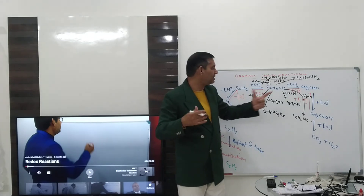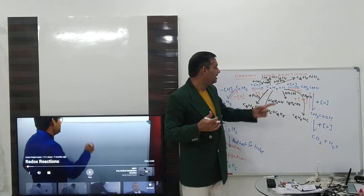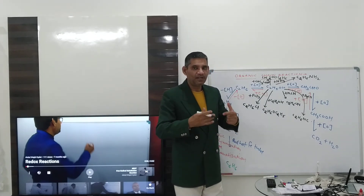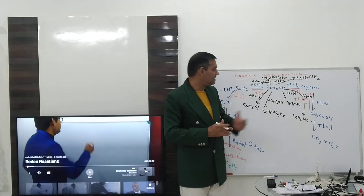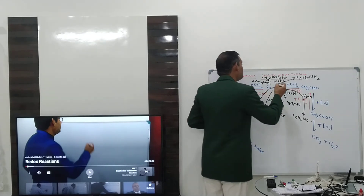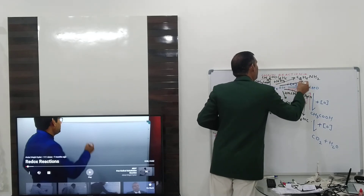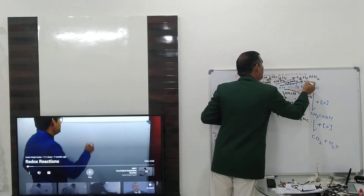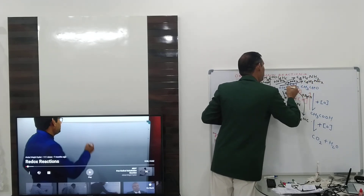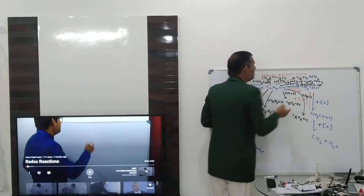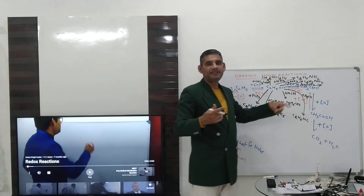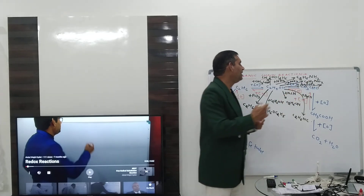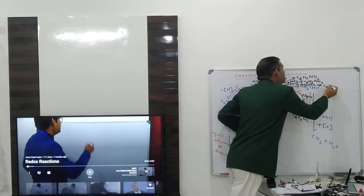Why this difference in product with KCN and AgCN? The reason is that KCN is ionic in nature and AgCN is covalent in nature. Because of that covalent or ionic nature of KCN and AgCN, this difference in product is there. Similarly, if C2H5OH reacts with KNO2, product formed will always be C2H5NO2; and if it reacts with AgNO2 — again KNO2 is ionic and AgNO2 is covalent — there will be difference in product. With KNO2 you get C2H5NO2 and with AgNO2 we will always be getting C2H5ONO.